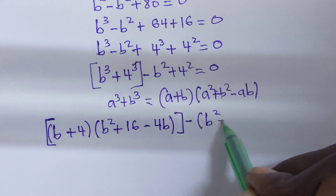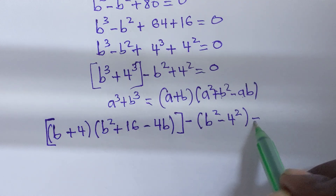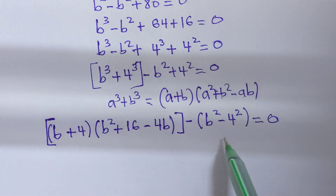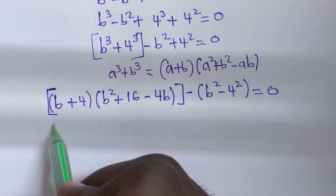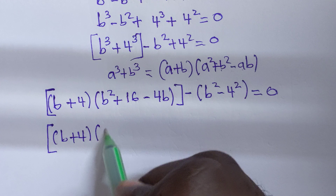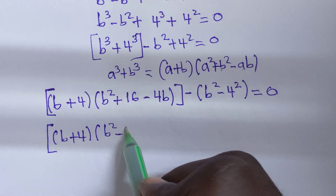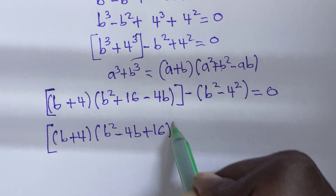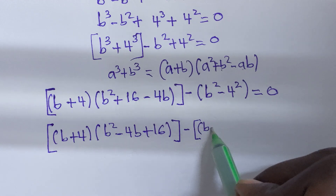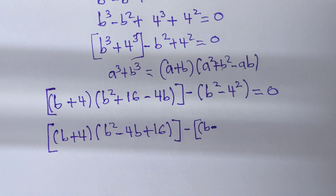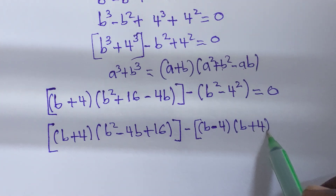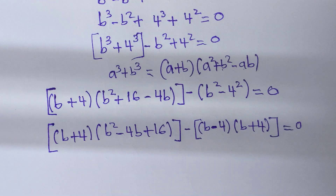Factorizing b squared minus 4 squared gives us a difference of two squares. This provides (b plus 4)(b squared minus 4b plus 16), minus (b minus 4)(b plus 4), which equals 0.